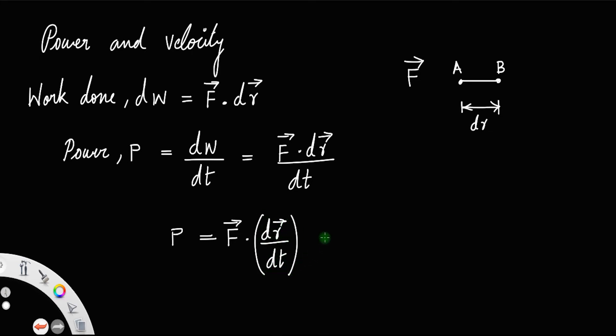And we know that the derivative of position with respect to time, or rate of change of position of a body, is its velocity. That is, velocity equals dR/dt.